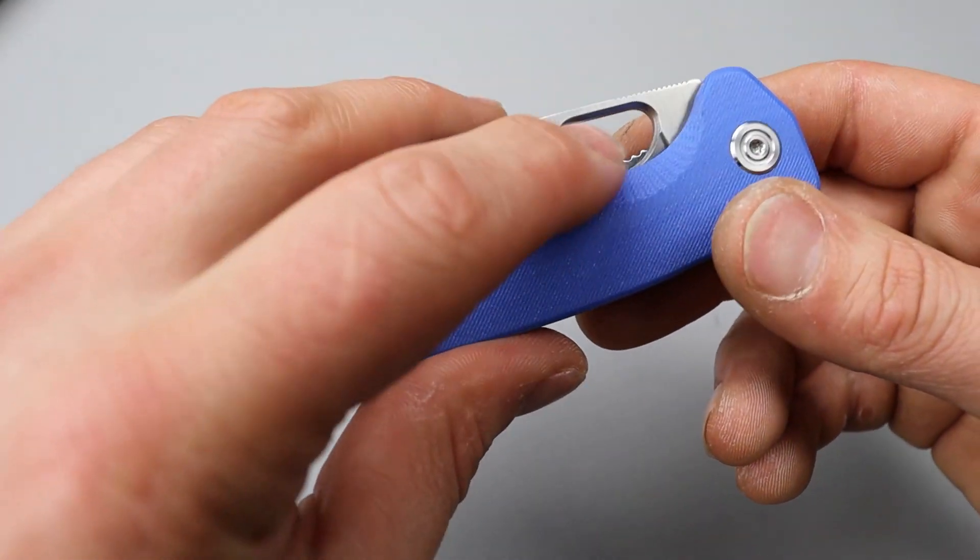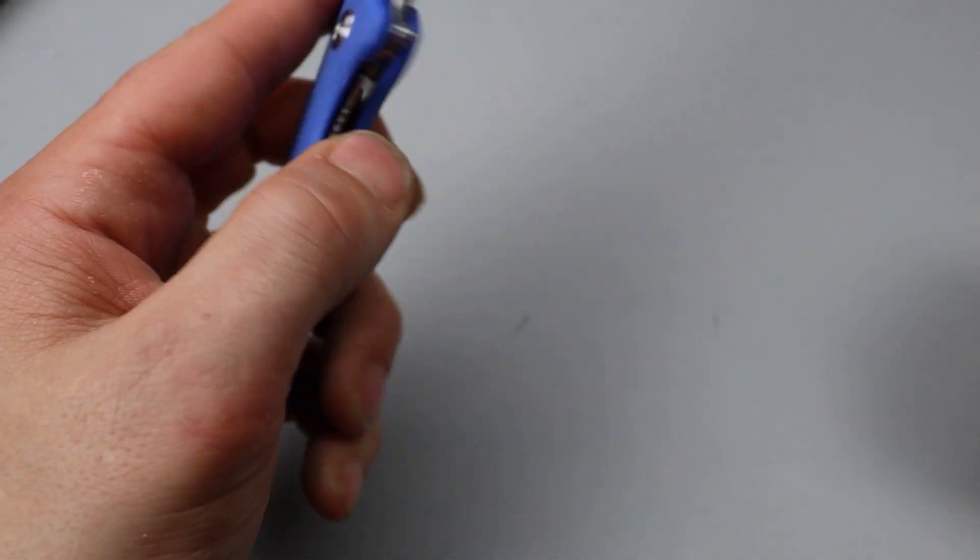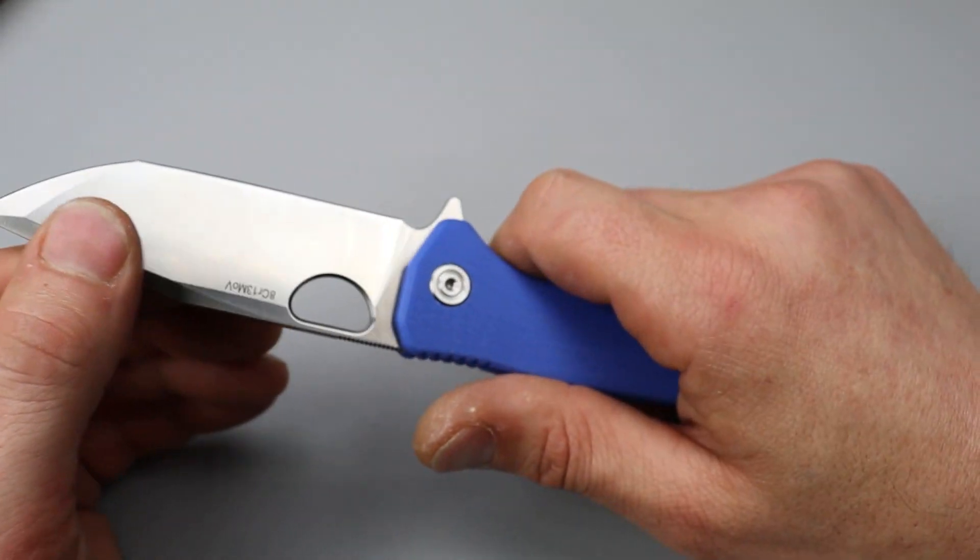Man, that reverse flick is so good. Even for lefties, man. Because, you have an even bigger opening on that side because of the lock bar cutout. Such a good knife for right-handed or left-handed people.